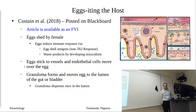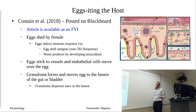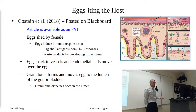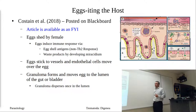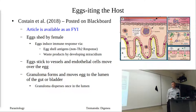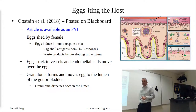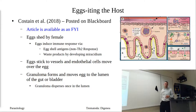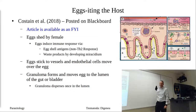I posted an article on Blackboard — Costain et al., 2018 — as an FYI if you're curious or want more details. It's a newer review article compared to what you find in textbooks. So how do the eggs get out? First, they get shed by the female worm. Once shed, they're in the bloodstream and they start to induce an immune response. There are two reasons: one is the eggshell, which has antigens on it and generates a non-TH2 type response. The paper explains how that accomplishes it.